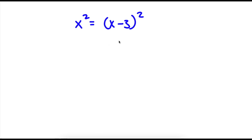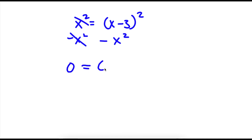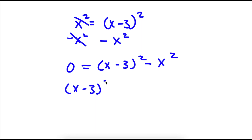So what I'm first going to do is subtract x squared on both sides. These two will cancel out and I will be left with 0 is equal to x minus 3 squared minus x squared. Now I'm going to rewrite this as x minus 3 squared minus x squared is equal to 0, so now the 0 is on the right hand side.